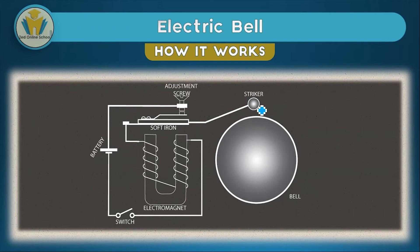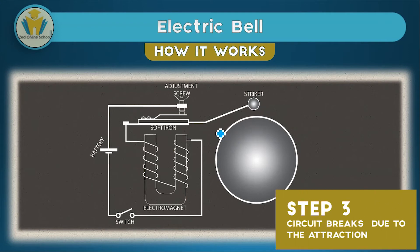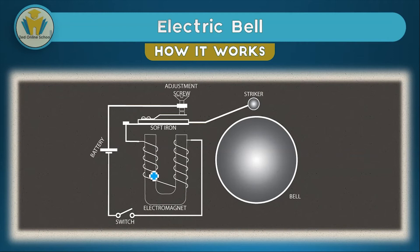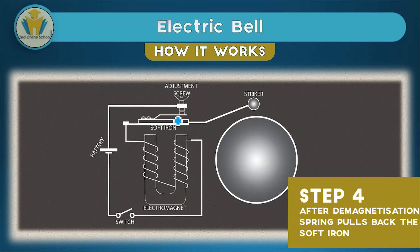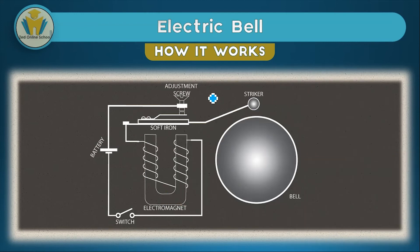When the soft iron is attracted to the electromagnet, the striker hits the bell. At that point, the contacts are no longer together, so the circuit is broken. The electromagnet then begins to lose its magnetic properties, and when it loses them fully, the spring pulls the soft iron back to the adjusting screw. This restores the circuit, current flows again, and the process repeats — this is how an electric bell keeps on ringing continuously as long as the switch is pressed.